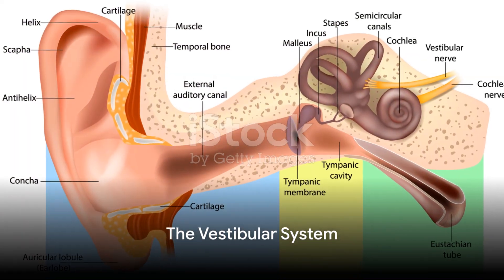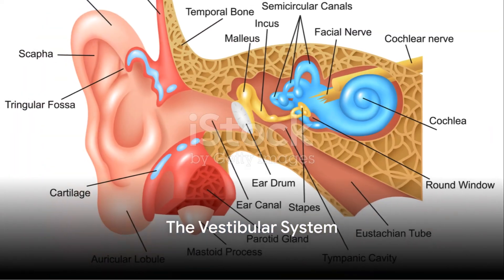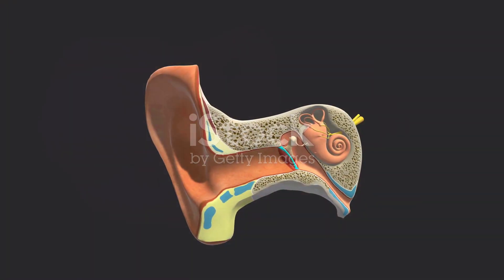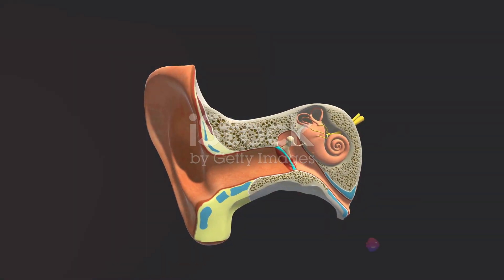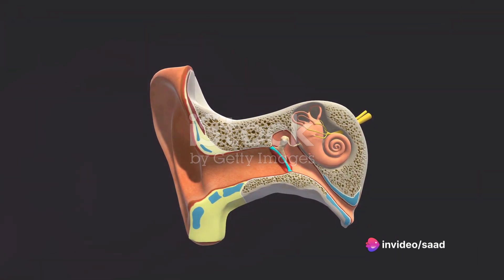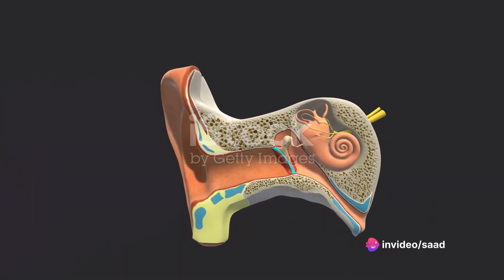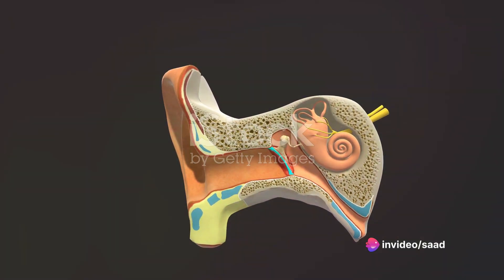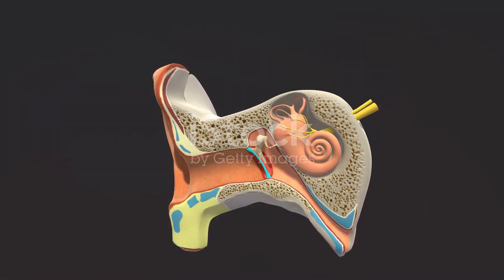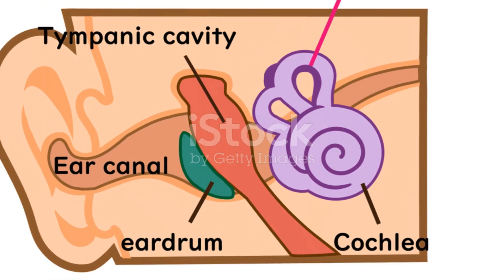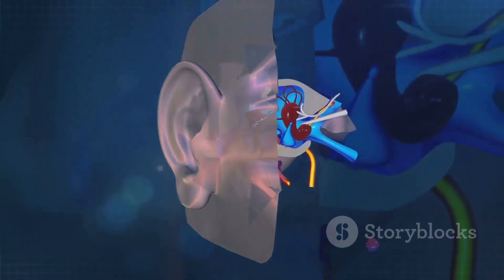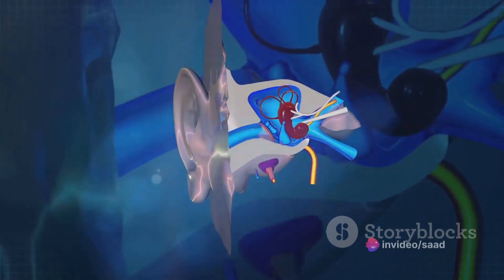In the intricate ballet of human movement, our ability to spin without losing our balance is a testament to the incredible design of our inner ear. Join us as we delve into the mesmerizing world of the vestibular system and the fluid dynamics that come into play when we twirl and whirl. At the heart of this dance lies the vestibular system, a network nestled within the labyrinth of our inner ear.